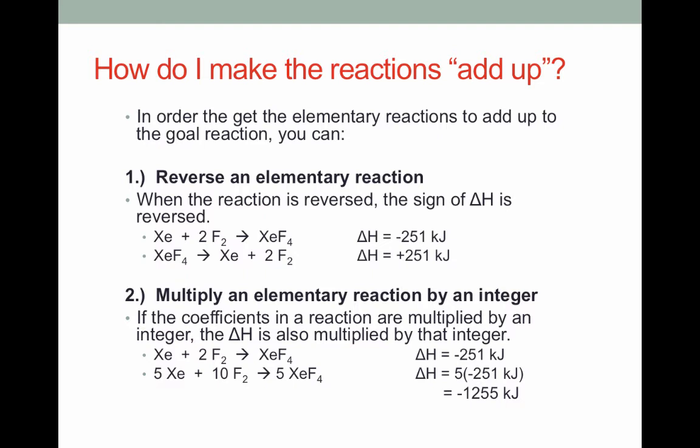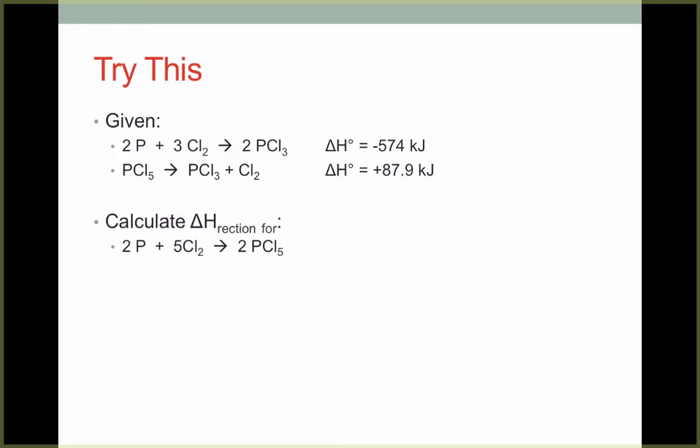So let's look at an example where we have to actually do some of these manipulations. Notice that in this example, we're given these two elementary reactions and asked to make them add up to find the delta H for our goal reaction written below. The first thing I want to do is see if things are on the right sides of each equation. Let's start by looking at our first elementary reaction. Our first reactant, 2P, is on the reactant side in our elementary reaction and it's also on the reactant side in our goal reaction. Cl2 is on the reactant side in our elementary reaction and on the reactant side in our goal reaction. So I don't want to flip this reaction. I want to leave this one as is. Notice the Cl2 has the wrong coefficient, but we're going to deal with that later. For right now, we just want to see if we need to flip the reaction.